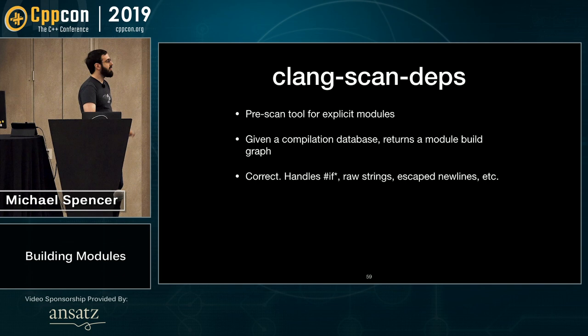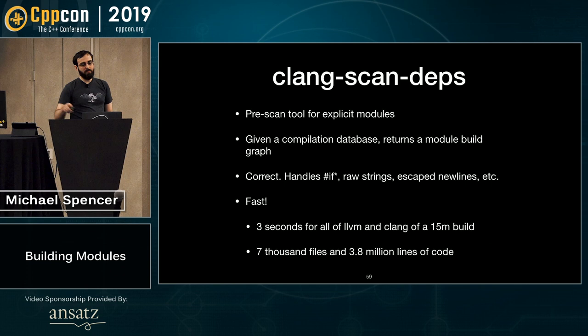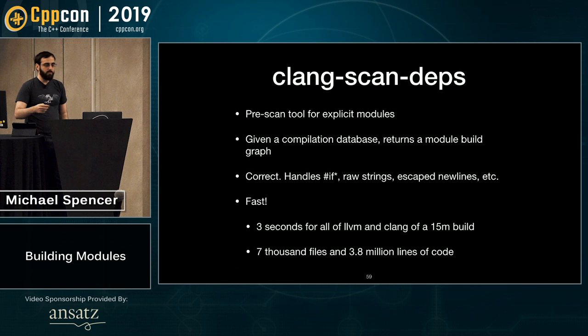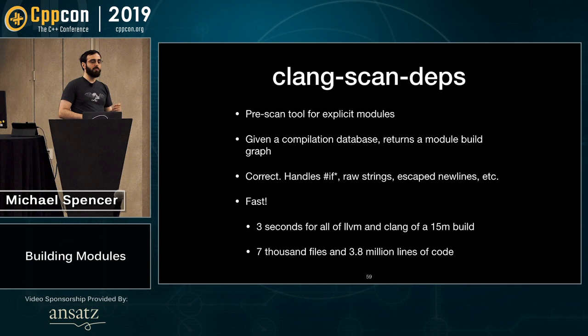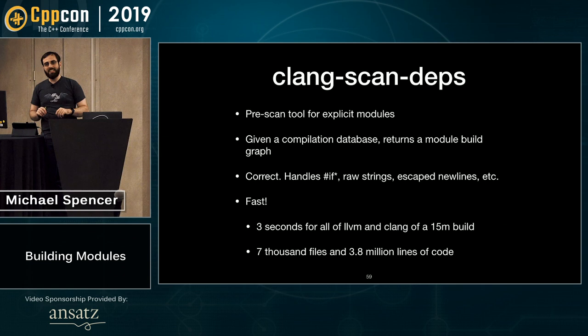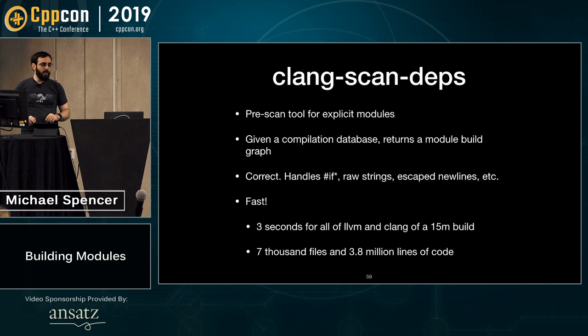What about performance? It's three seconds for all of LLVM and Clang — a 15-minute build — covering 7,000 files and 3.8 million lines of code, on an 18-core iMac Pro. Only 33 milliseconds of that is reading files and doing the minimization. The rest is spent in Clang's full preprocessor, which we haven't rewritten yet and does a lot of expensive tracking we don't use. We can make this significantly faster — I'm pretty sure we can easily get it under a second for all of LLVM and Clang. Out of a 15-minute build, we essentially view this as free.